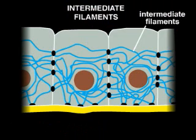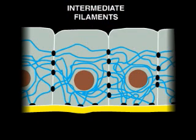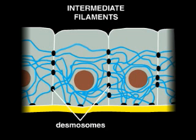Intermediate filaments are found in animal cells that require a lot of strength, such as the epithelial cells of the skin. Some of these filaments span the length of the cell, connecting cell-cell junctions called desmosomes.